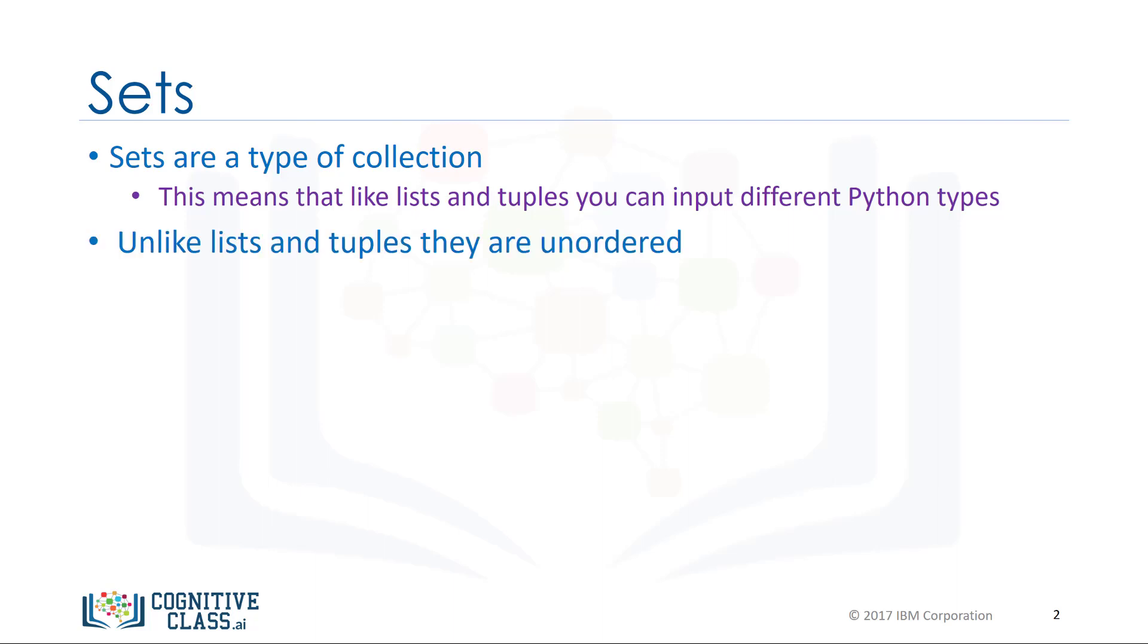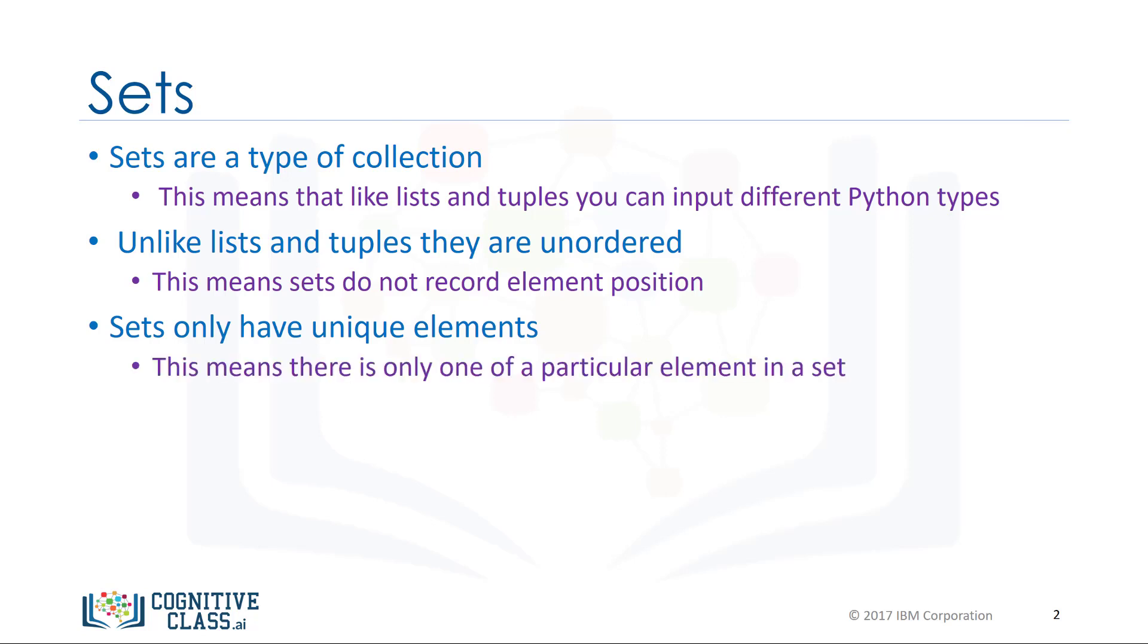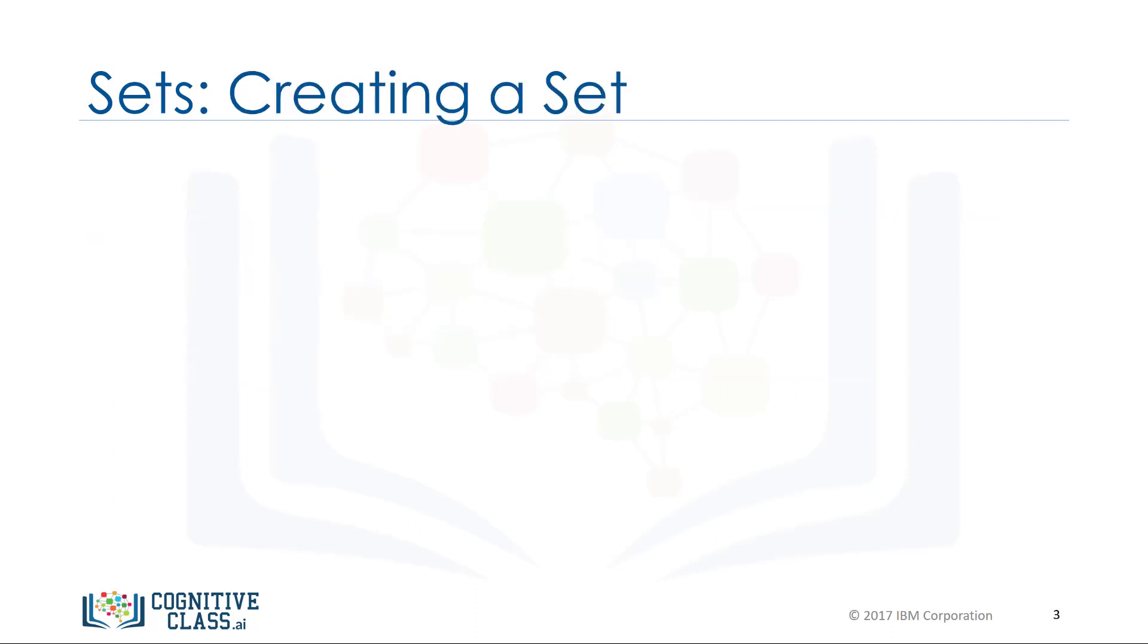Unlike lists and tuples, they are unordered. This means sets do not record element position. Sets only have unique elements. This means there is only one of a particular element in a set.